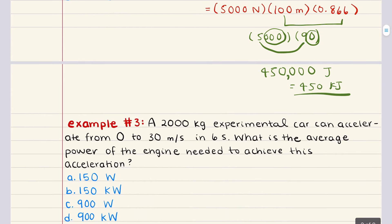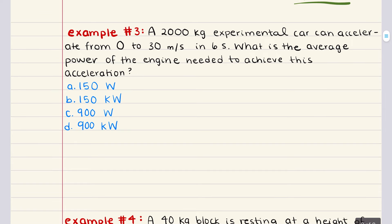Let's tackle problem three next. Problem three says a 2,000 kilogram experimental car can accelerate from 0 to 30 meters per second in six seconds. What is the average power of the engine needed to achieve this acceleration? Power is defined as the rate at which work is done — in other words, the rate at which energy is transferred or transformed. Mathematically, power equals work divided by time.